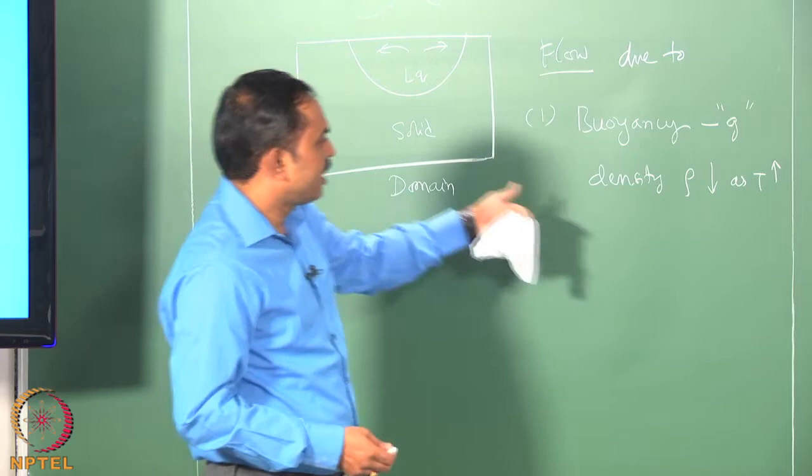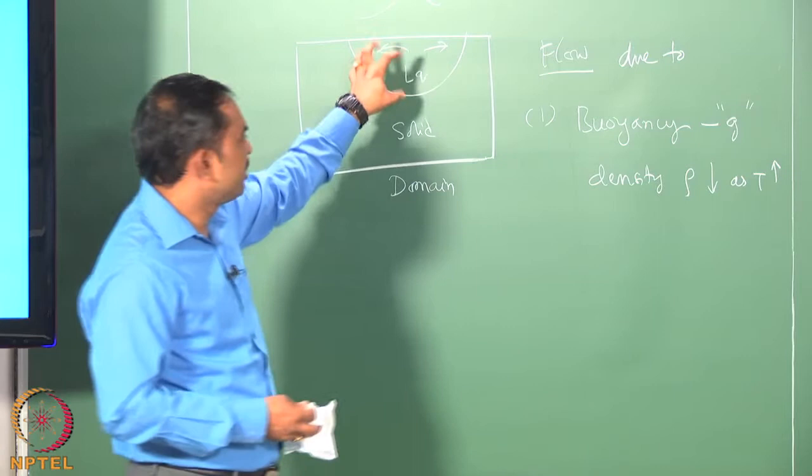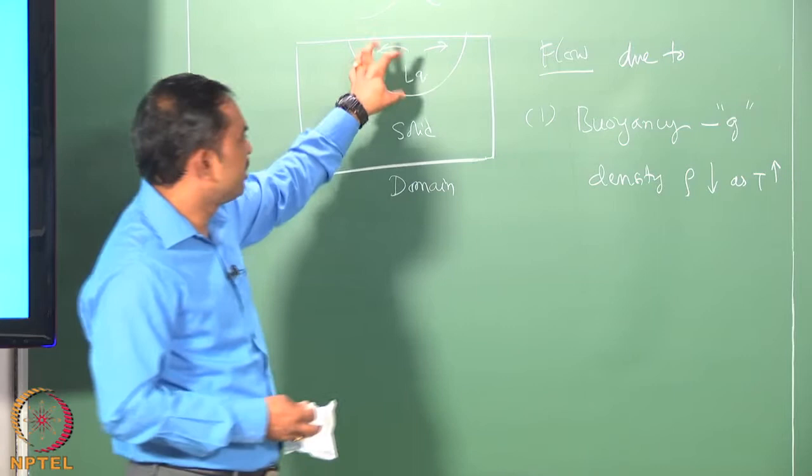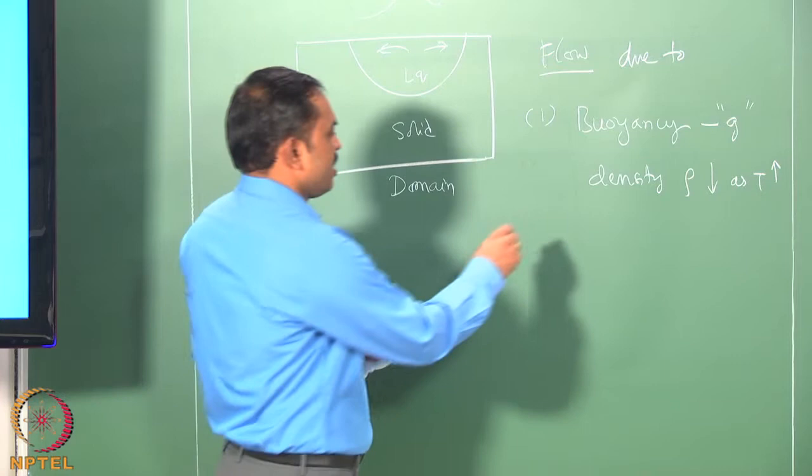Buoyancy is one driving force for the liquid to have convection because there are temperature differences within the pool. The temperature is highest at the heat source and at the melting point along the fusion zone boundary, so there is a temperature distribution implying a density distribution. Whenever there is a density distribution acted upon by gravity, you would have buoyancy taking place. The second reason why fluid flow will happen is because of surface tension.